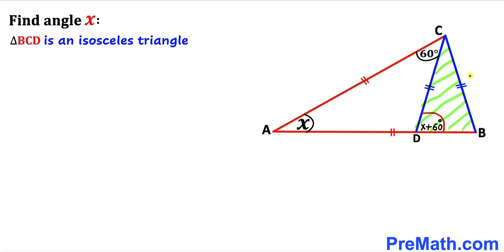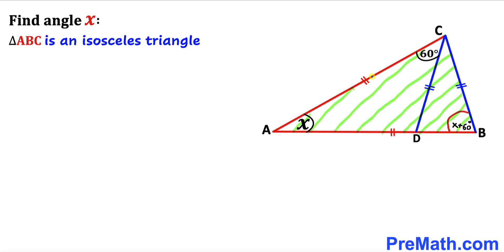Let's focus on triangle BCD. We can see that this is an isosceles triangle since this side length equals this side length. So this angle has got to be equal to this angle. If this angle is X plus 60 degrees, then this angle is X plus 60 degrees as well.